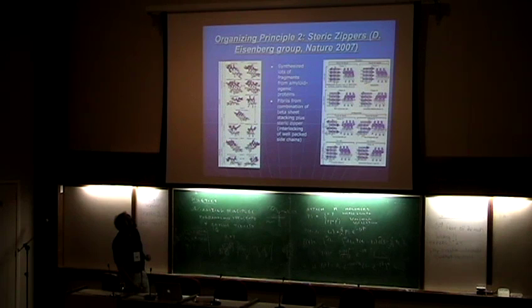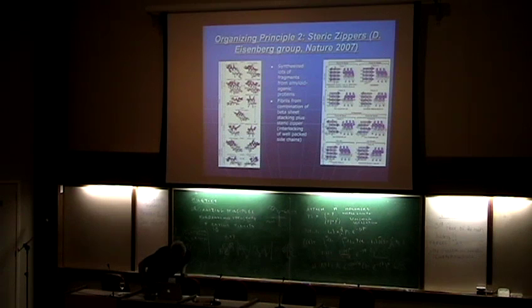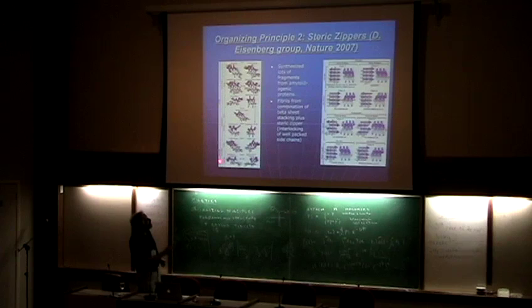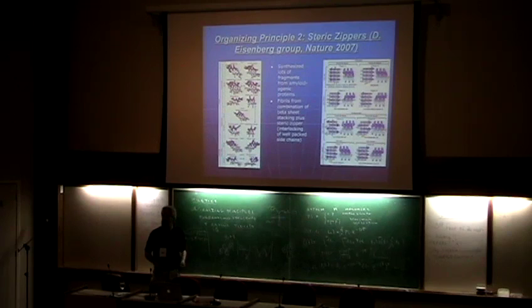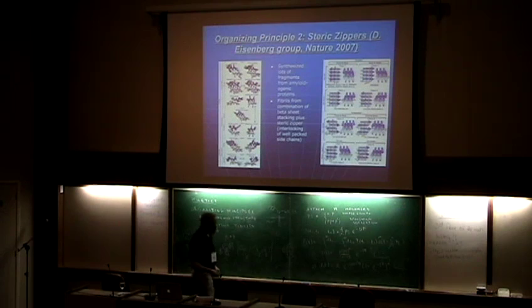What they did was they synthesized lots of small fragments from amyloidogenic proteins. There are sequences from the yeast prions, sequences from the A-beta peptide involved in Alzheimer's, and quite a few different short sequences. They threw them together in a test tube and watched them aggregate. He discovered that many of them aggregate according to these steric zipper rules.